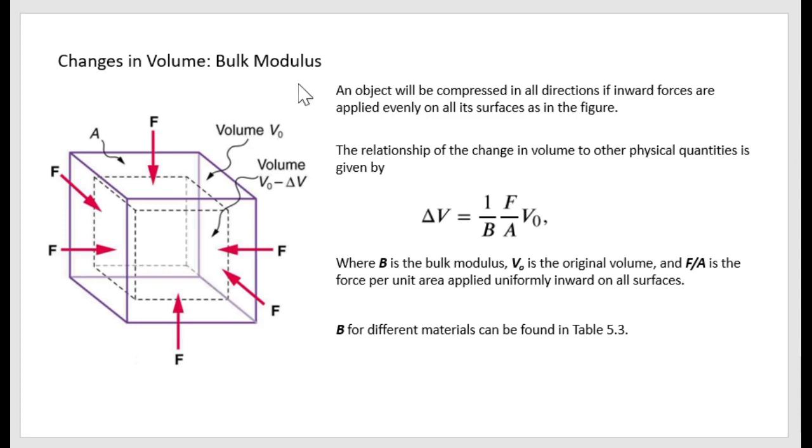Where B is the bulk modulus, V0 is the original volume, and F over A is the force per unit area applied uniformly inward on all surfaces. B, which is bulk modulus, can be found from Table 5.3.